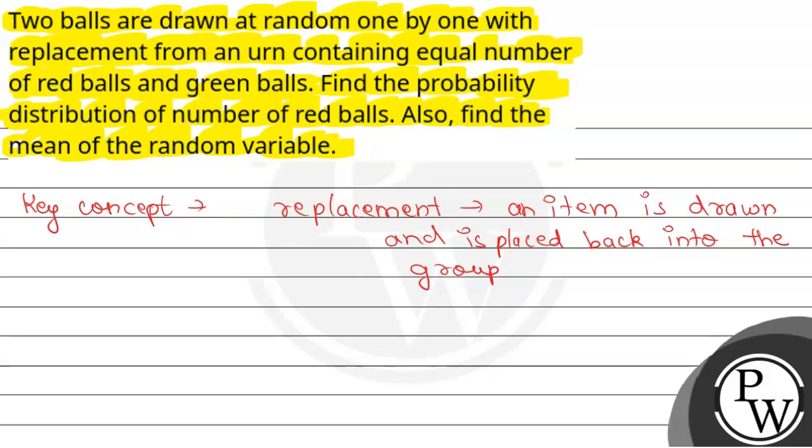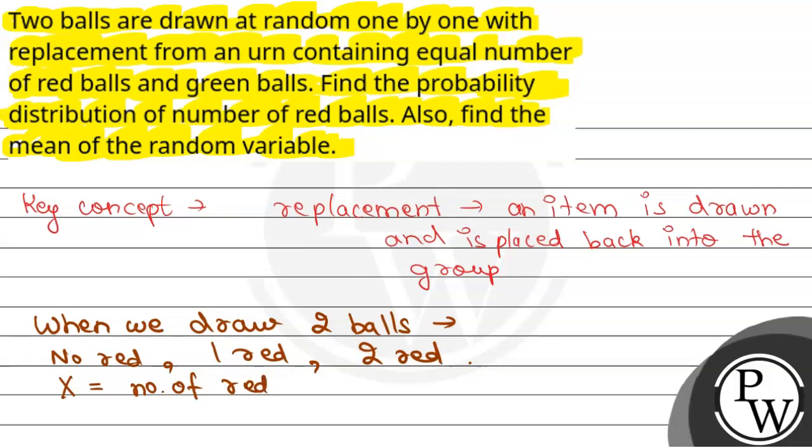Reading the problem: two balls drawn one by one with replacement from an urn containing equal number of red balls and green balls. When we draw two balls, we can either get no red balls, or one red ball, or two red balls. These are the possible outcomes for the total number of red balls.